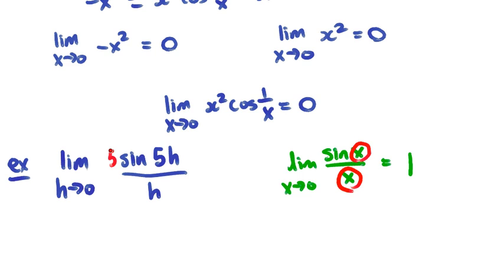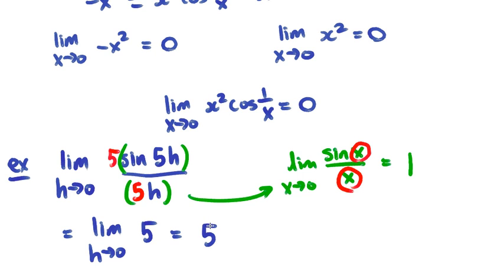One way to do that is simply multiply everything by 5. Then this is equal to 1, and we have a constant function whose limit is just 5.